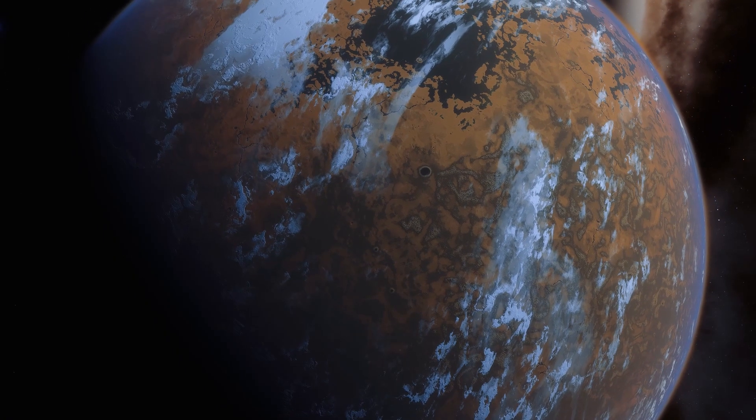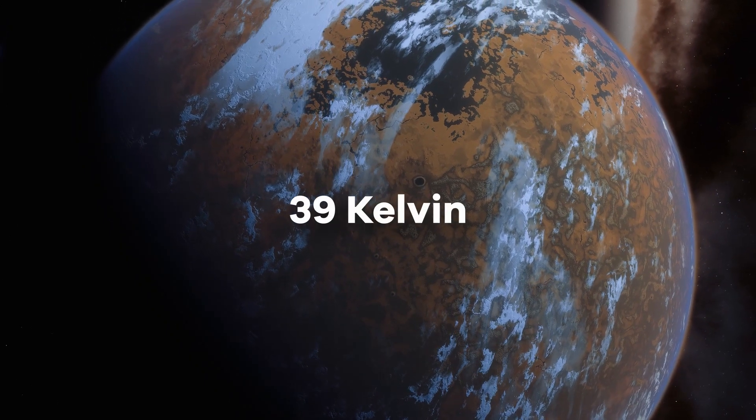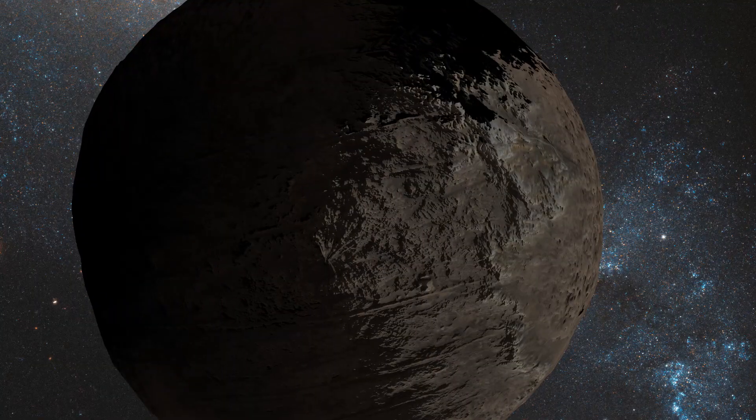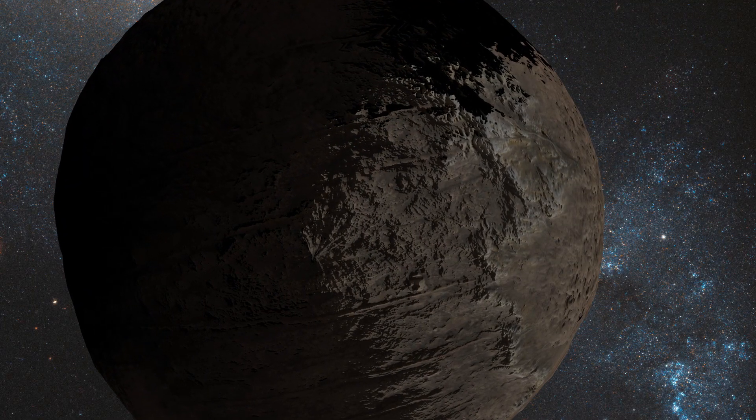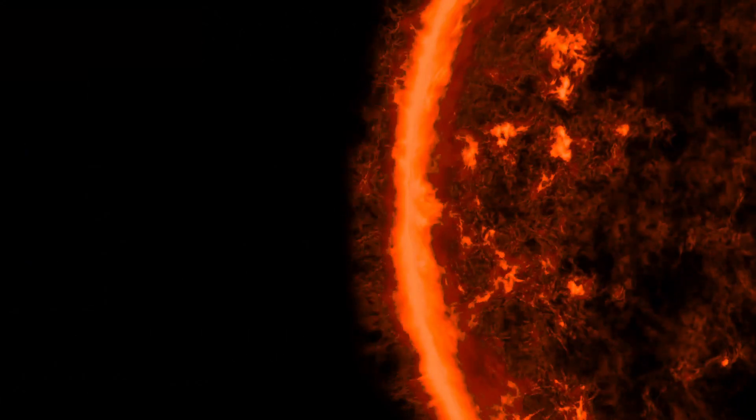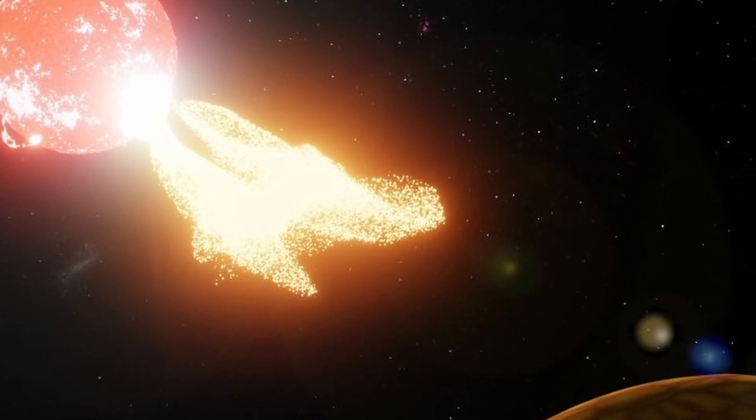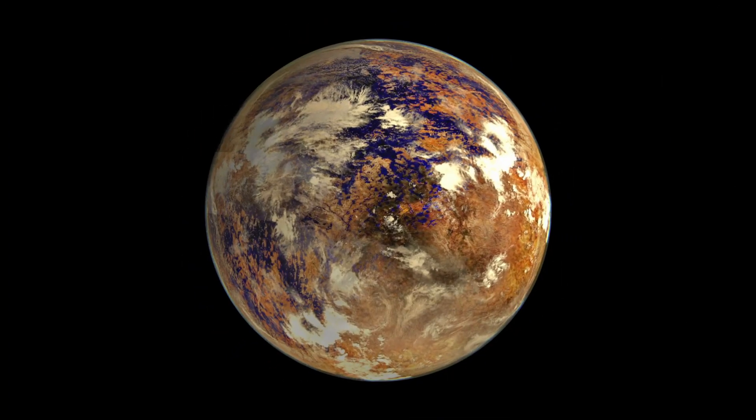Proxima Centauri b was officially announced on August 24, 2016, by the European Southern Observatory, ESO. Its existence was confirmed after several years of studying the radial velocity of its parent star. This discovery marked a significant milestone in the field of planetology and sparked increased interest in the Alpha Centauri star system, of which Proxima is a member.